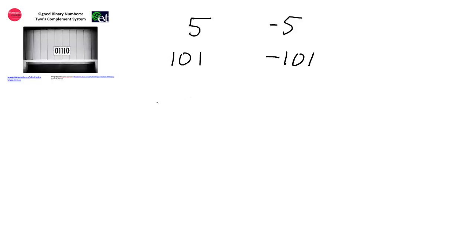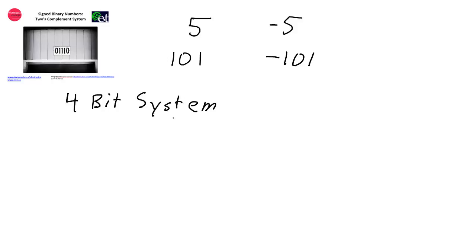In any signed binary number representation implemented on a computer, the number of bits has to be a fixed number. We have to say this is an 8-bit system, or a 16-bit system, or a 4-bit system, because the number of bits is very important in helping determine the sign of the number. Let's look at a simple example using a 4-bit system, just so we don't have to deal with too many bits. We've got a 4-bit system and we're going to represent signed numbers using the 2's complement system.